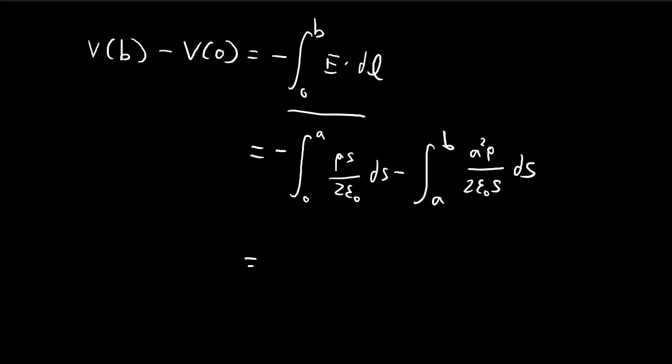We're essentially done. What we have to do is just solve this simple integral. Here we get a square over 2, just simple integration. And here we get these constants times natural log b over a.